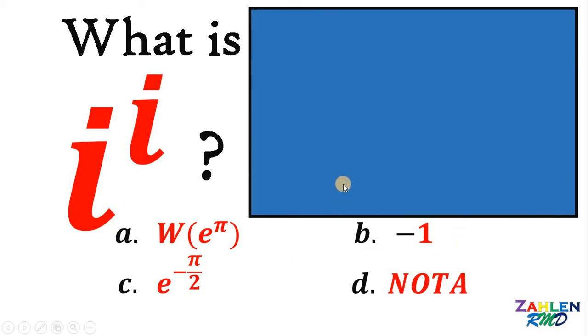To answer this question, we will use an iconic equation, which is Euler's equation. So, we have e raised to iπ plus 1 equals 0. This is one of the most beautiful equations that is ever created.